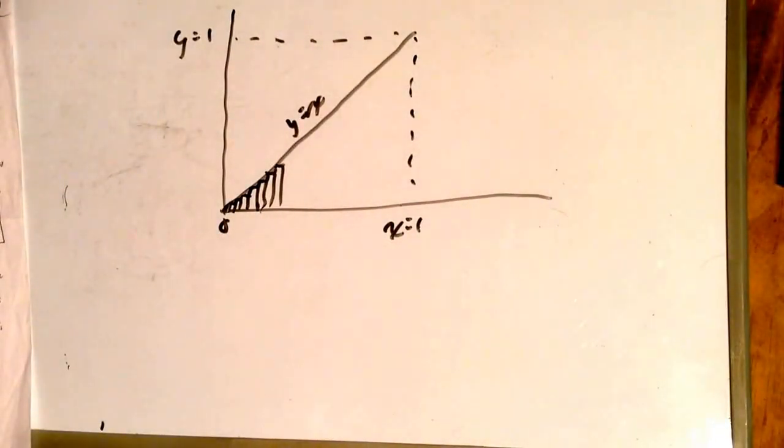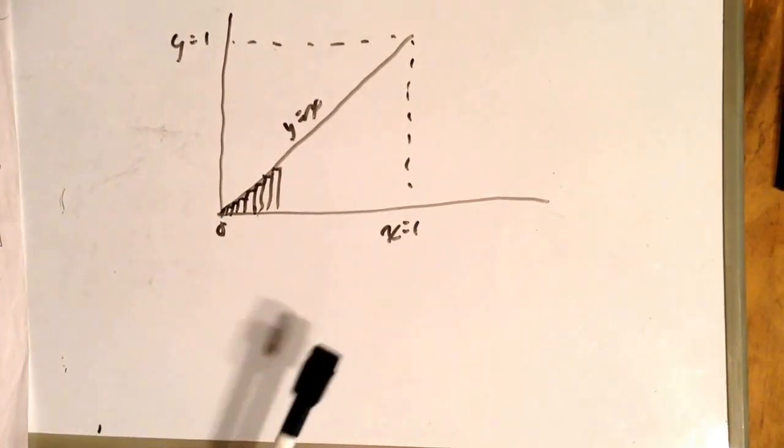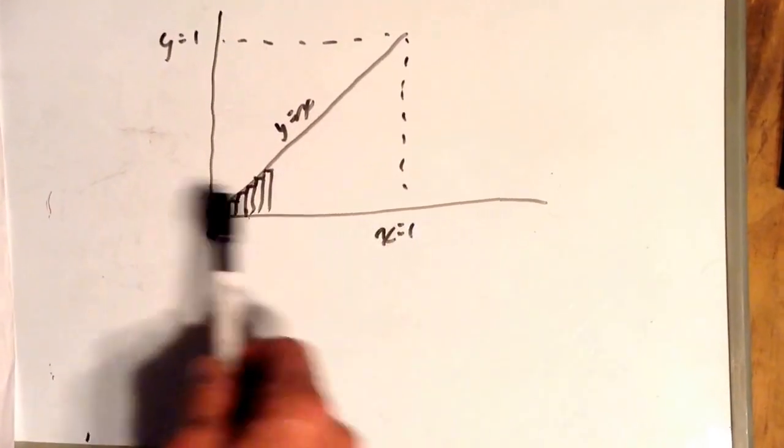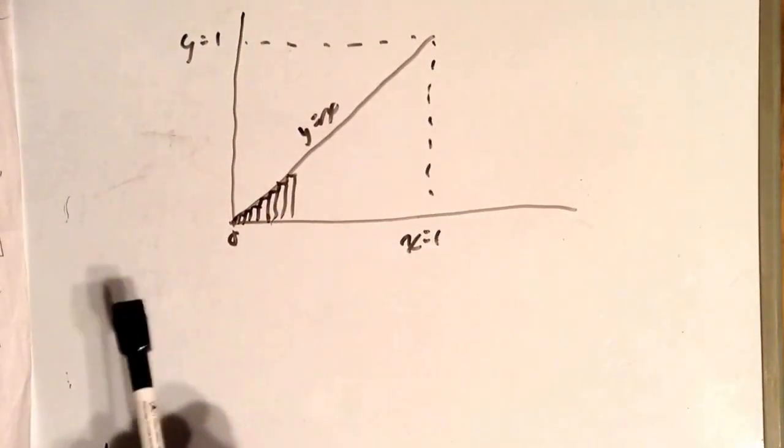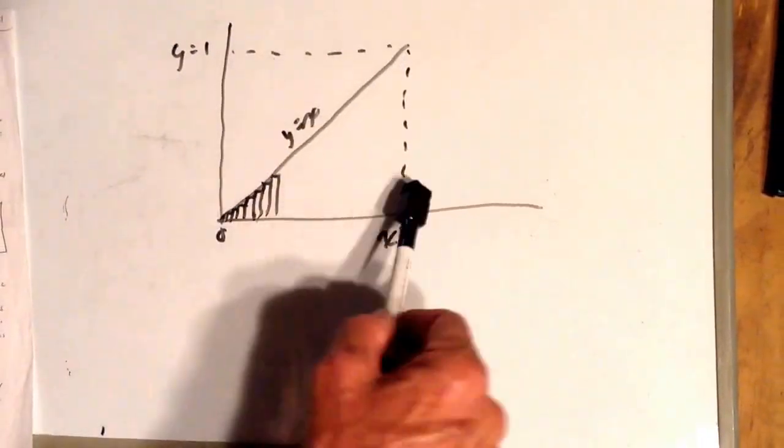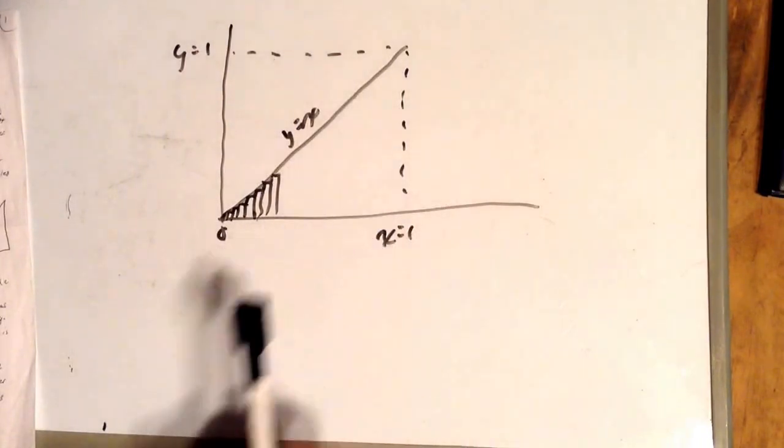You may say, what's the point in using calculus? We can plainly see that the triangle's area from 0 to 1 is 1 half because the area of this whole square here is 1 by 1, which is 1. So there's half of it in that triangle. It's obvious that the area of this triangle is 1 half.